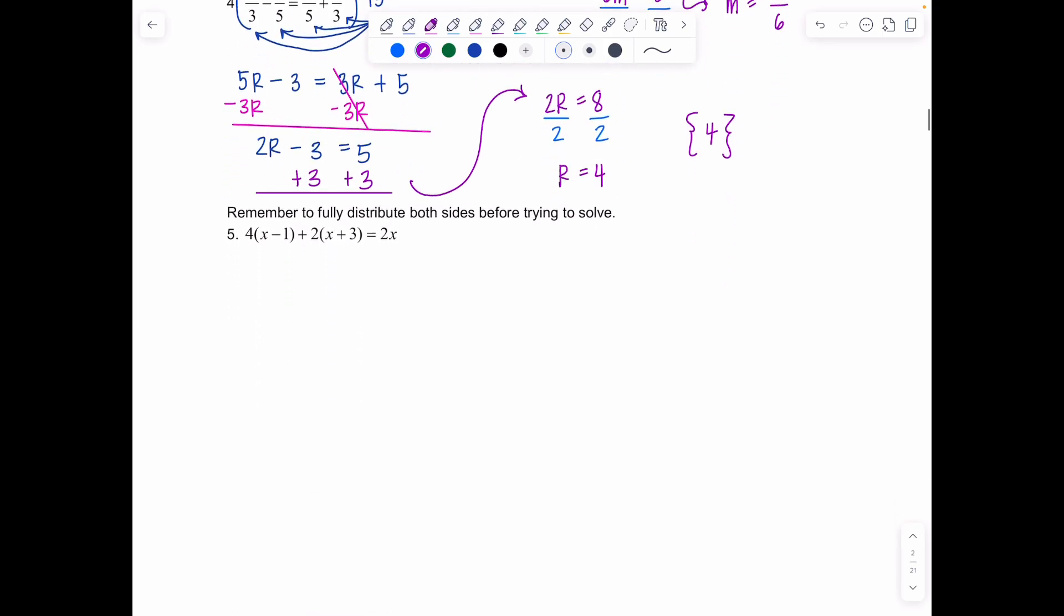Now remember anytime you have parentheses like this you have parentheses like this and something sitting outside you need to distribute all the way through. So start distributing before you do anything else before you try to solve. Let's try this example here. So if I distribute everything out we'll have 4x minus 4 plus 2x plus 6 equals 2x. Now before you continue you want to combine like terms. Like terms are terms that have the same variable raised to the same power. So here we have 4x and 2x. If I add those together that gives me 6x and then negative 4 plus 6 that's positive 2. Okay we want variables. Let's just stick with keeping them on the left. Constants on the right.